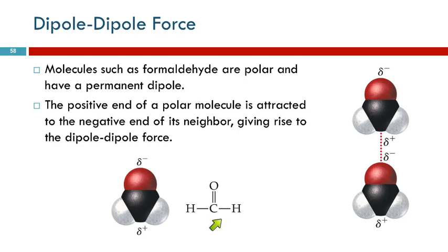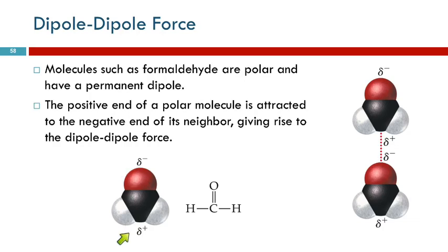Here is formaldehyde — carbon, oxygen, and two hydrogens. Using the simplified method: look at the carbon, are there any lone pairs on the central atom? No. Are the atoms bonded to carbon all the same? No — there's an oxygen, which is different from the hydrogens. Polar molecule. The oxygen is more electronegative, closer to fluorine on the periodic table, so it pulls the electrons toward that end. This end is slightly negative, the other end slightly positive, all the time. So between two formaldehyde molecules there's this dipole-dipole attraction.